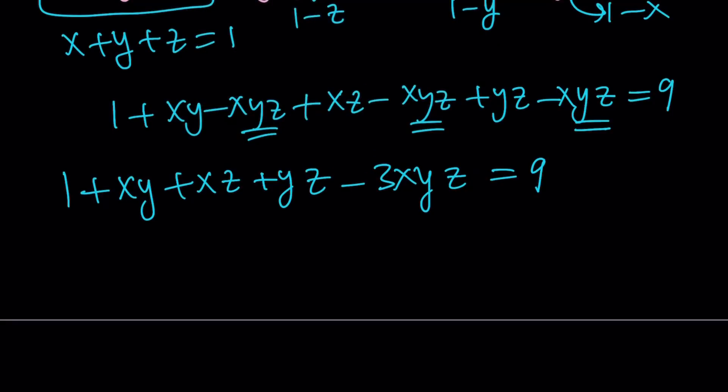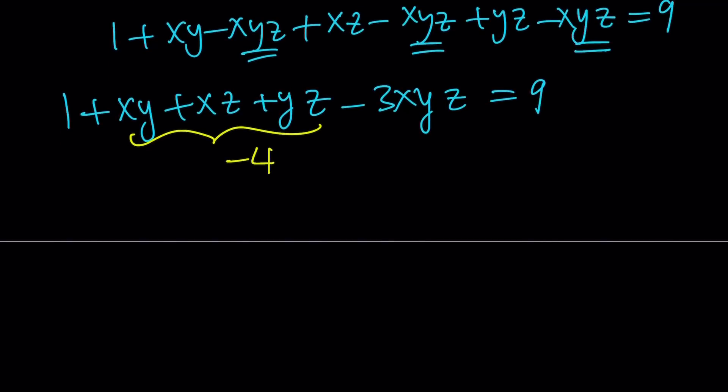Now, we have the x, y plus x, z plus y, z. We know that it's equal to negative 4. So from here, we get x, y, z. So 1 minus 4 is negative 3. And then, if you add it to both sides, you're going to get negative 3 x, y, z equals 12. And x, y, z is equal to negative 4.